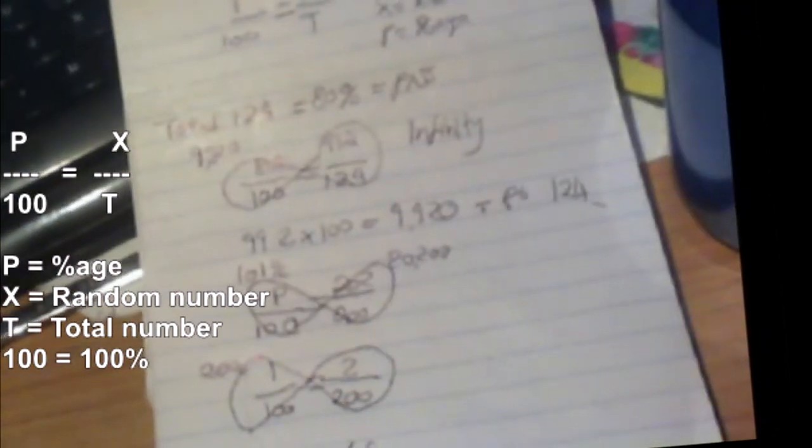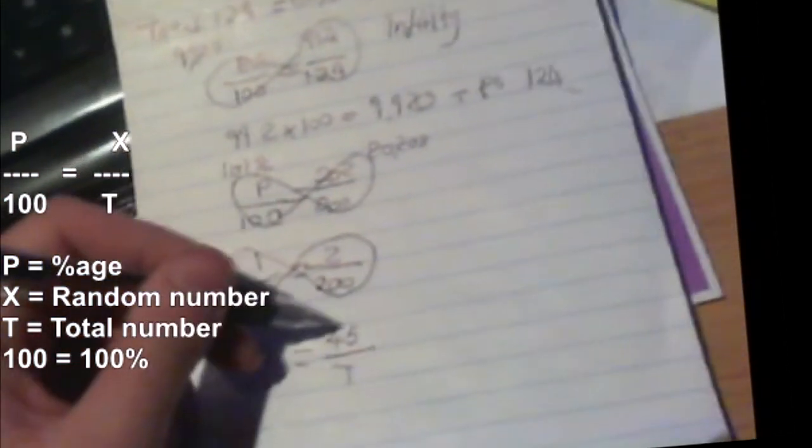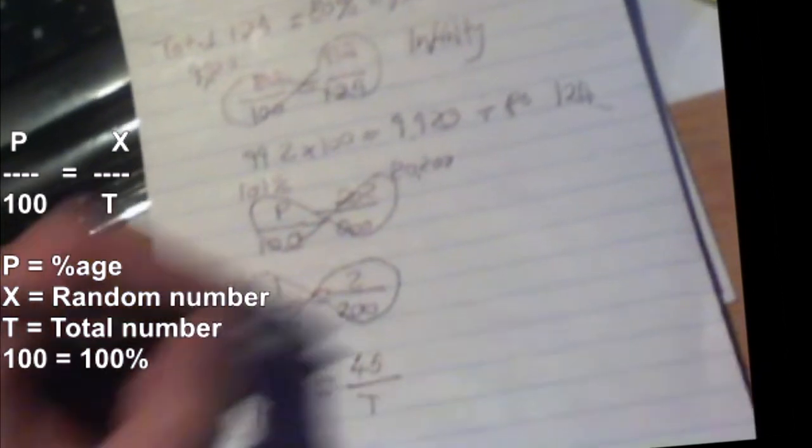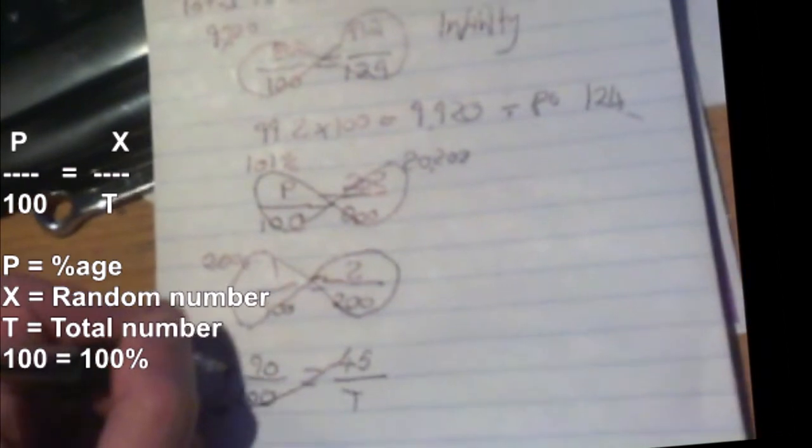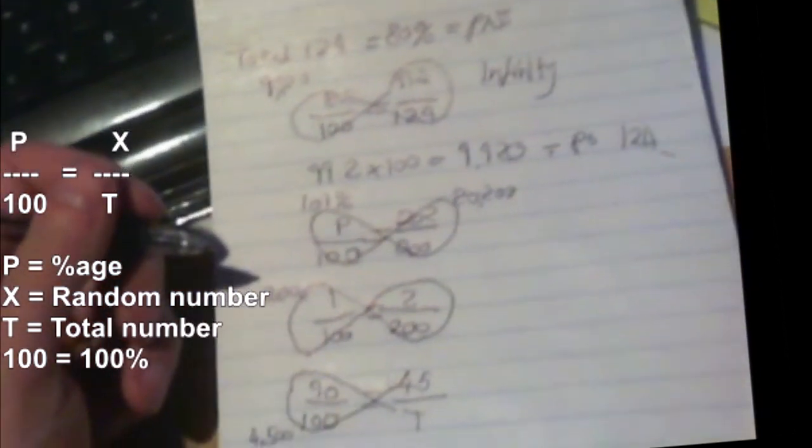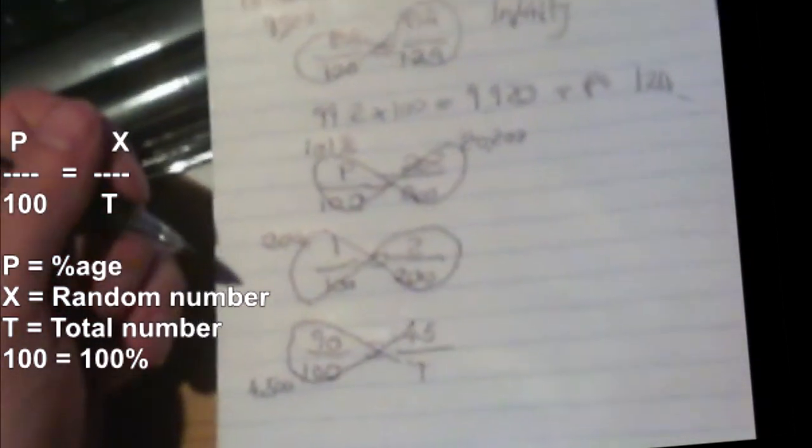If 45 is 90 percent, what is the total number? We can't do 90 times T. Well, T times 90—you could if you want to do algebra, but algebra is stupid. Once again, we can do 45. It doesn't matter which way you go: 100 times 45 or 45 times 100 is the same thing. You always times the first two numbers and then divide by the third to give you the last number. So 4,500 divided by 90 gives you 50.